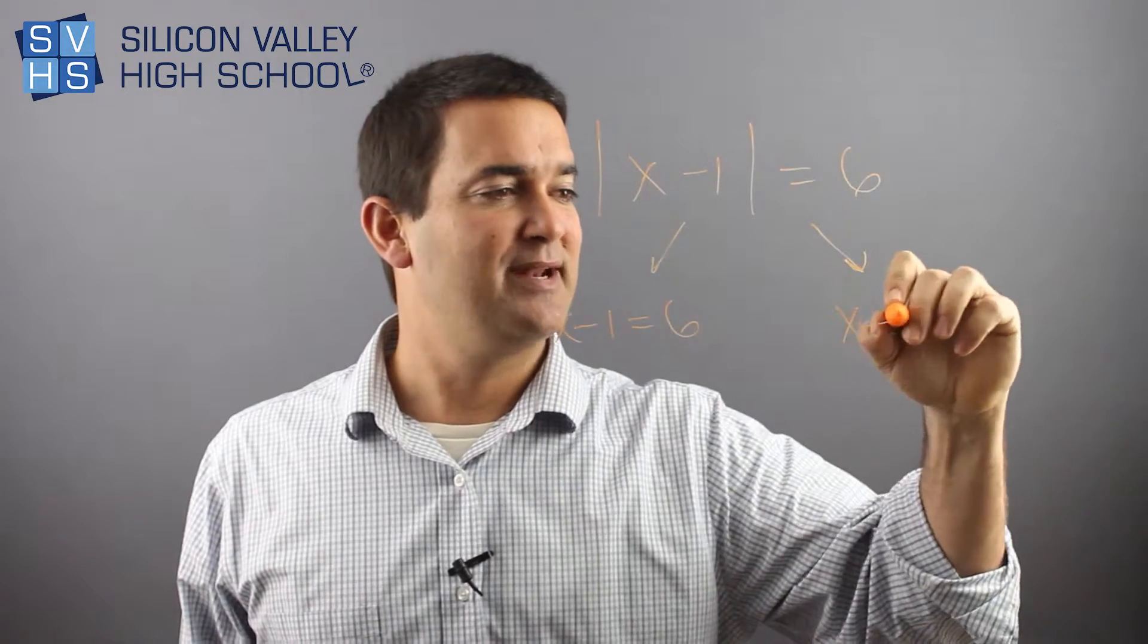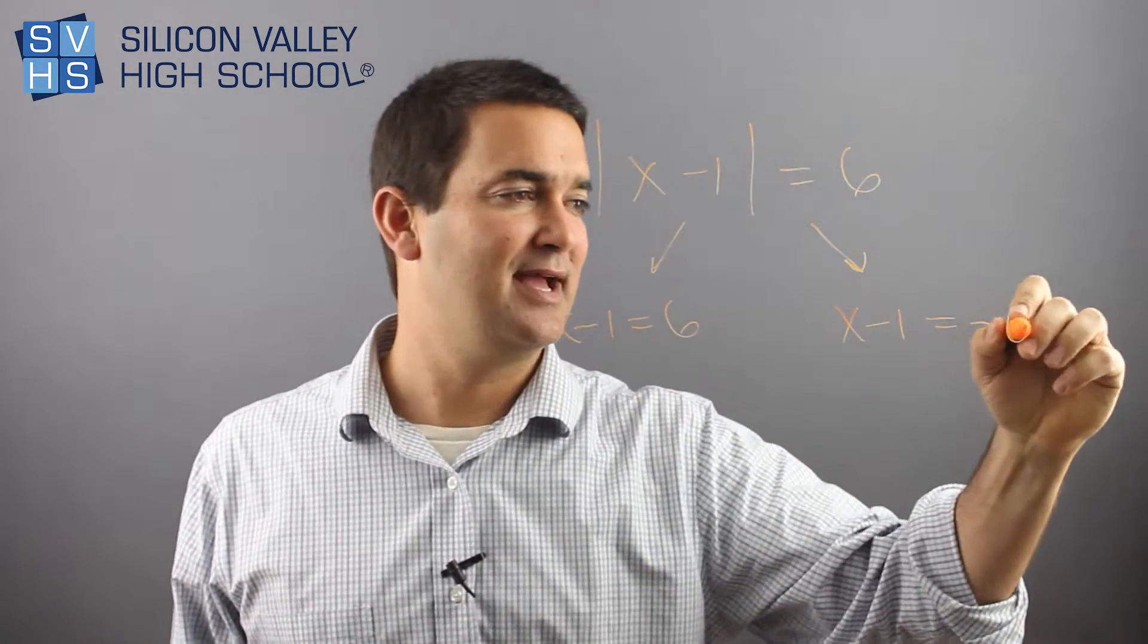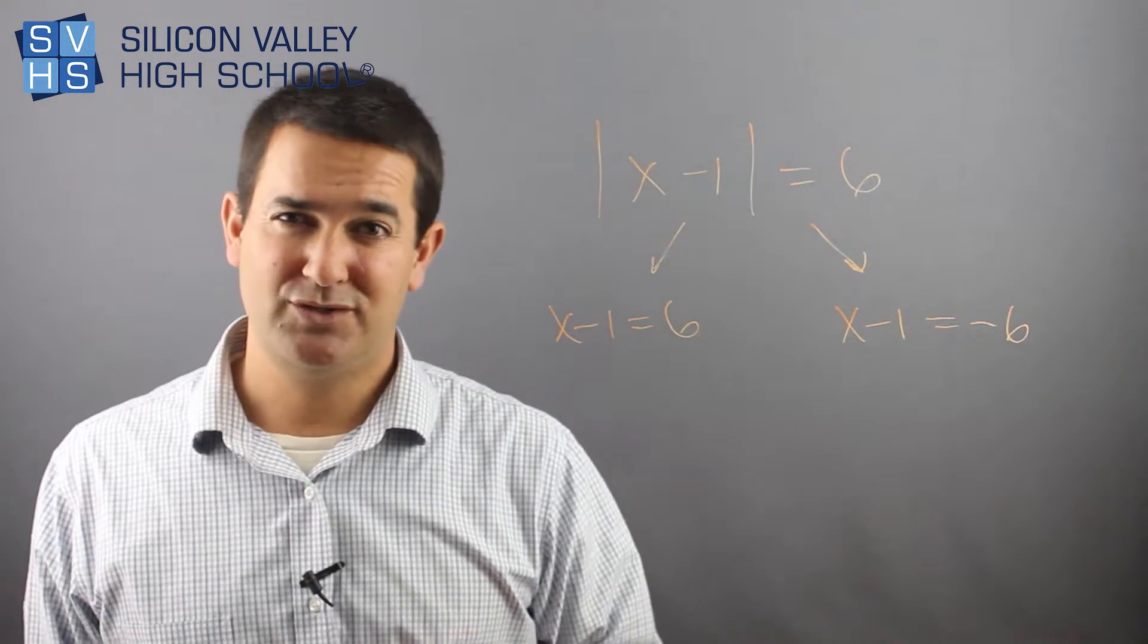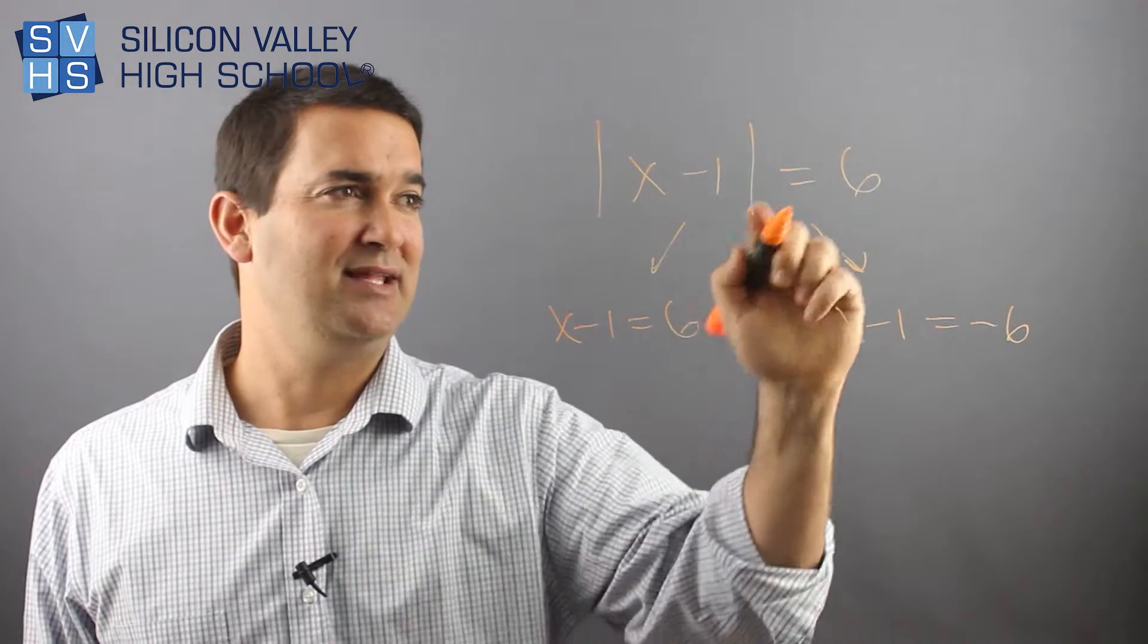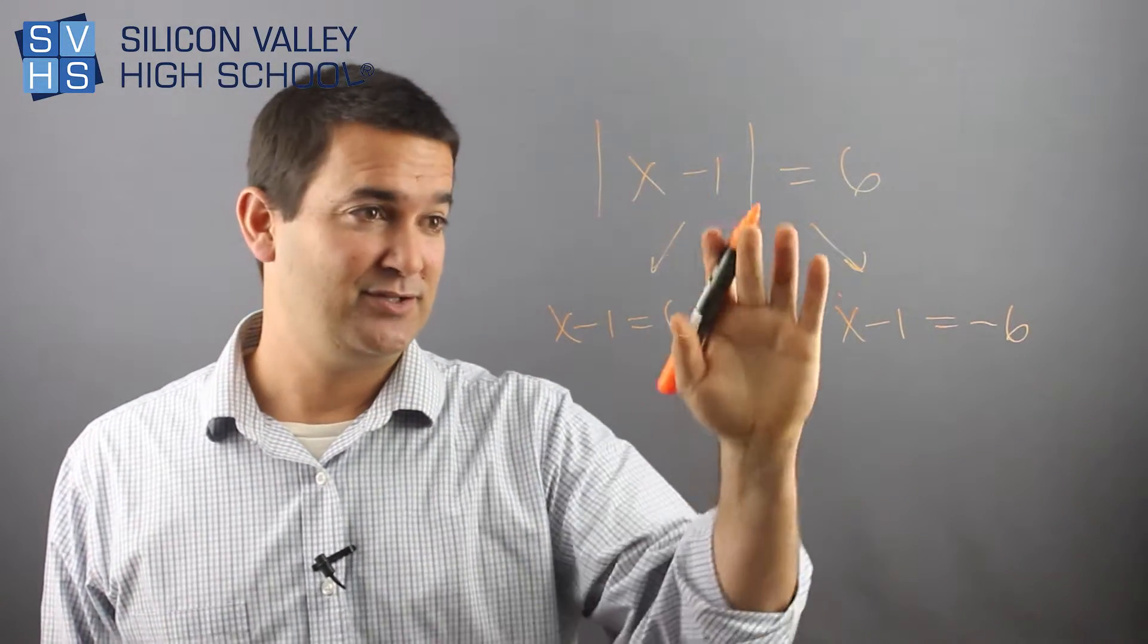The one on the right is x minus 1 again, and the only thing you do is you change the sign of the answer, negative 6. Don't do what some teachers tell you. They leave him alone and change all the inside. Ignore that. So there's two arrows.